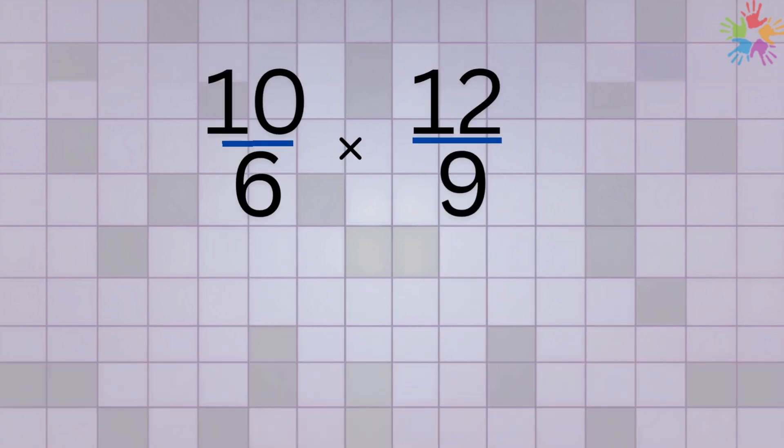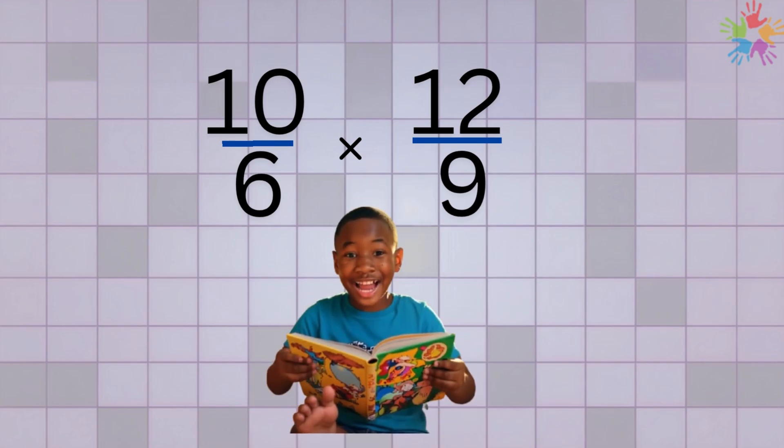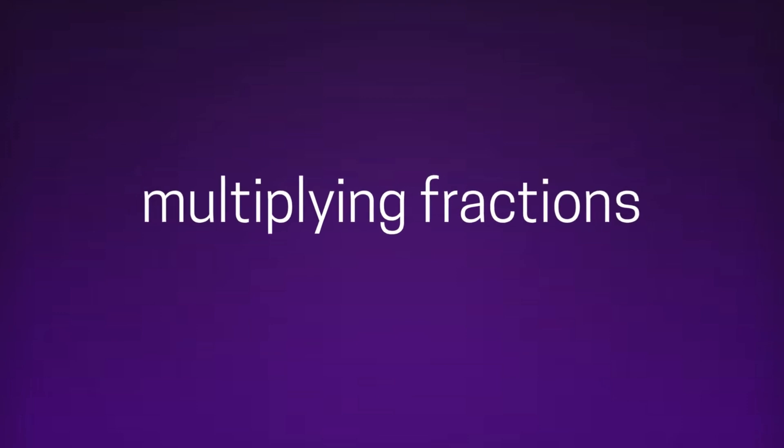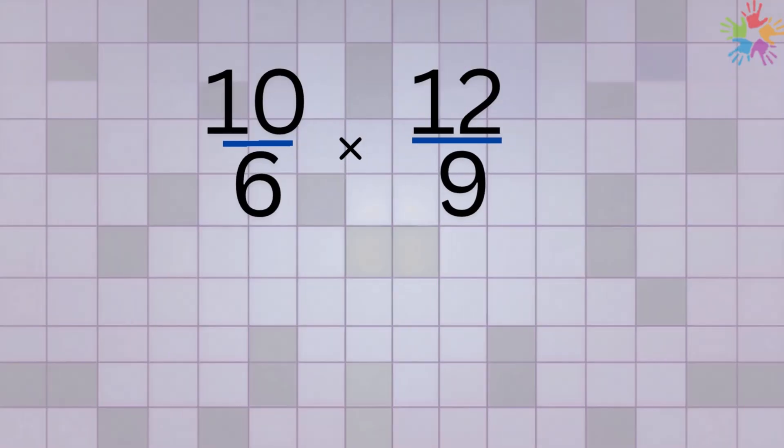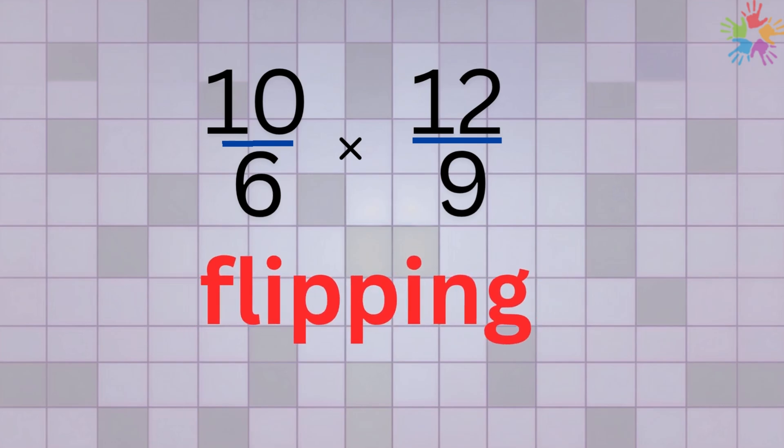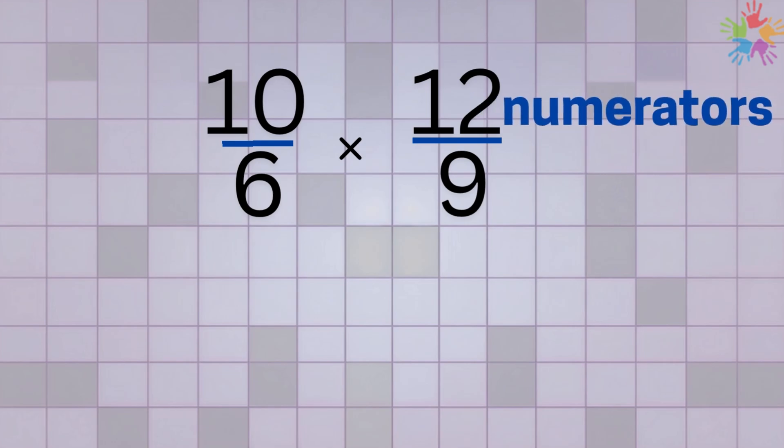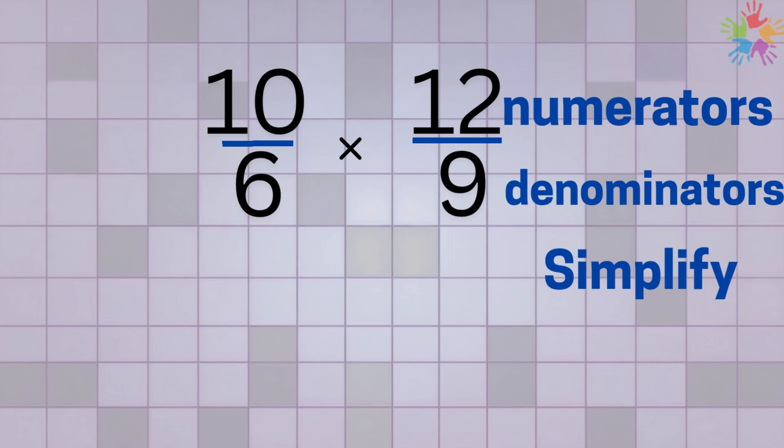Now that you're comfortable with dividing fractions, multiplying fractions will feel even easier, because it's just straightforward multiplying without flipping anything. Multiplying fractions is super simple. There's no flipping this time. Here's how it works. Step 1: Multiply the numerators, the top numbers. Step 2: Multiply the denominators, the bottom numbers. Step 3: Simplify your answer if you can.